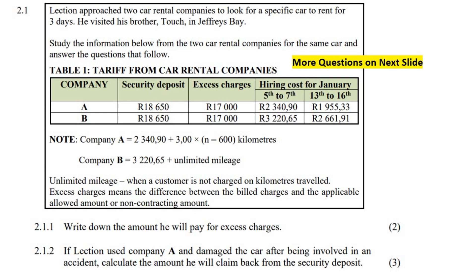So it says that Lection approached two car rental companies. Okay, so that's the person's name. Lection approached two car rental companies to look for a specific car to rent for three days, because he wants to visit his brother, who's called Touch, in Jefferies Bay. So Lection is going to visit Touch, and he needs to find a car. So he goes to two different companies, Company A and Company B, to see which company is cheaper.